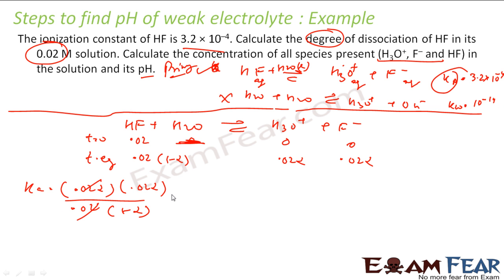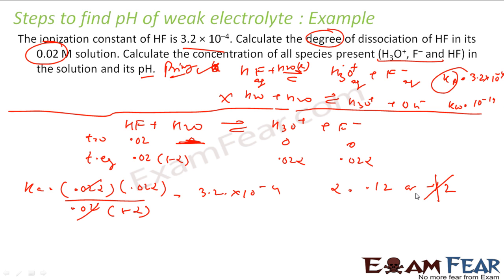This simplifies and Ka = 3.2×10⁻⁴. Solving, we get alpha = 0.12 or alpha = −0.12. Since a negative value is not possible, we ignore it. Alpha = 0.12, so the degree of dissociation is 0.12. That is our answer.